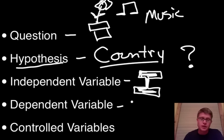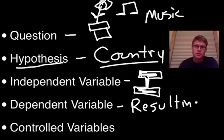The dependent variable then is a resulting variable. In other words, it results as an action of the independent variable. So if we go back to that question again: How does music affect plant growth? What's the independent variable? It's going to be the type of music that I play. What's the dependent variable? That's going to be plant growth.